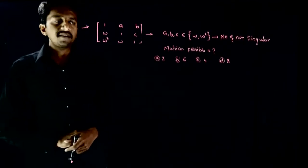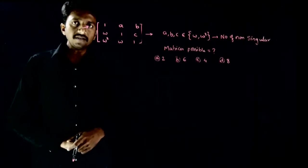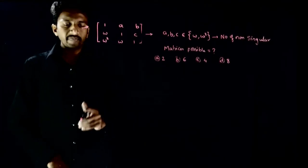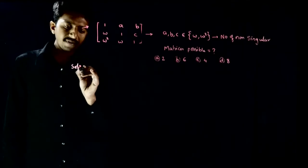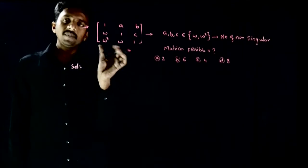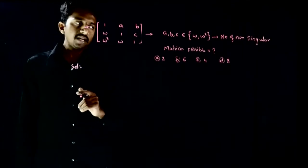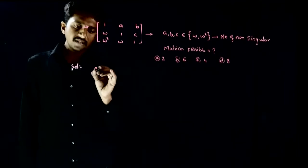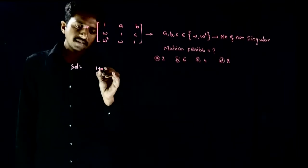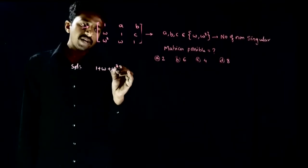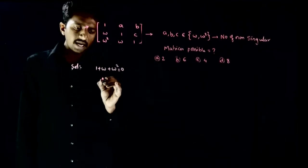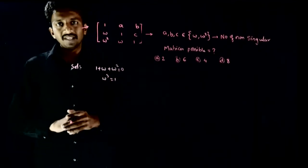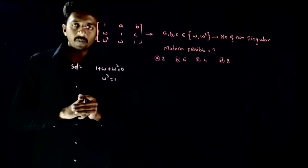Non-singular matrices means matrices whose determinant is non-zero. So let us try to find the determinant of this matrix. We know the basic omega properties: 1 + ω + ω² = 0 and ω³ = 1. These are the basic properties of omega.